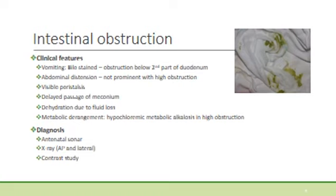Abdominal distension is not prominent in high obstructions, but is commonly seen with anorectal malformations, ileal and jejunal atresias. Visible peristalsis may be present. Delayed passage of meconium is a very important sign. In a low obstruction, there may be no meconium passage at all, while in a high obstruction, there may be meconium stools for a day or two.